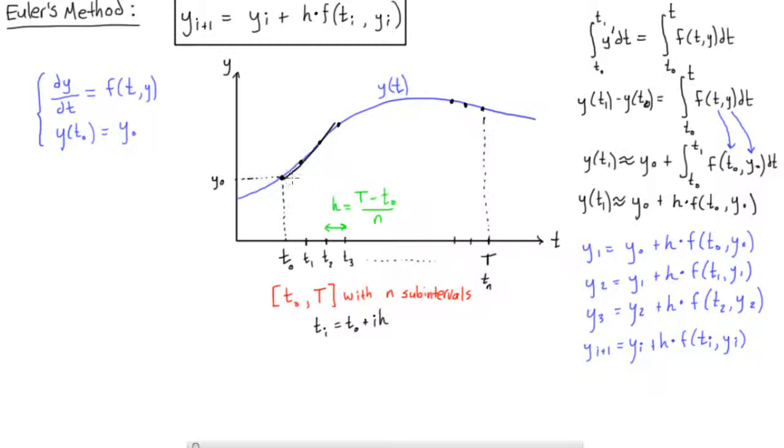So what we can do is we have, say we have some solution curve like this, this blue line, and we want to approximate what the value is at this capital T, at some point we've defined.